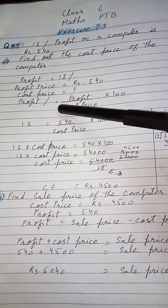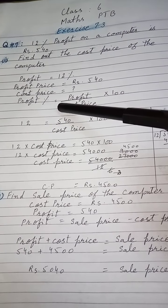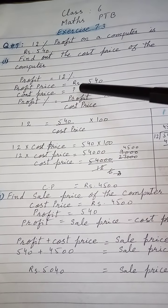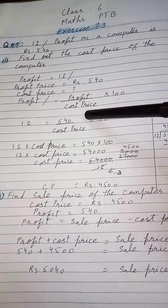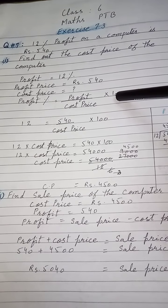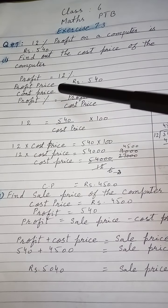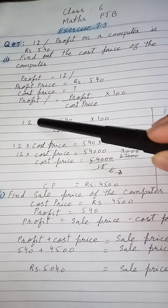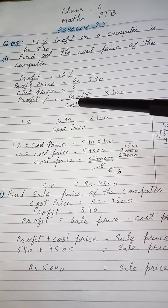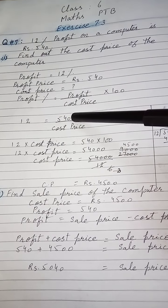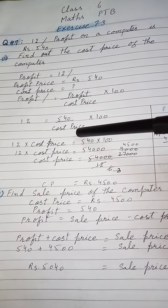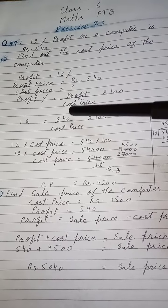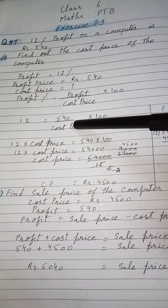Formula لگائیں گے: profit percent is equal to profit divided by cost price multiplied by 100. جو values given ہیں وہ put کریں گے: profit percent کی جگہ 12 لکھیں گے، profit کی جگہ 540 لکھیں گے، اور cost price آجے گی اور 100 لکھیں گے۔